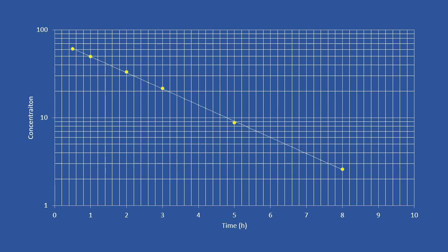This is the graph you should get. Let's look at the hidden information in this graph. First, if you remember, when we calculate the gradient for this straight line, you should be able to find ke, the elimination rate constant. Once you find this answer, you can convert it to t-half using the equation: t-half equals ln 2 divided by ke. The next information we can find from the graph is by extrapolating the line to the y-intercept, which gives the initial concentration.